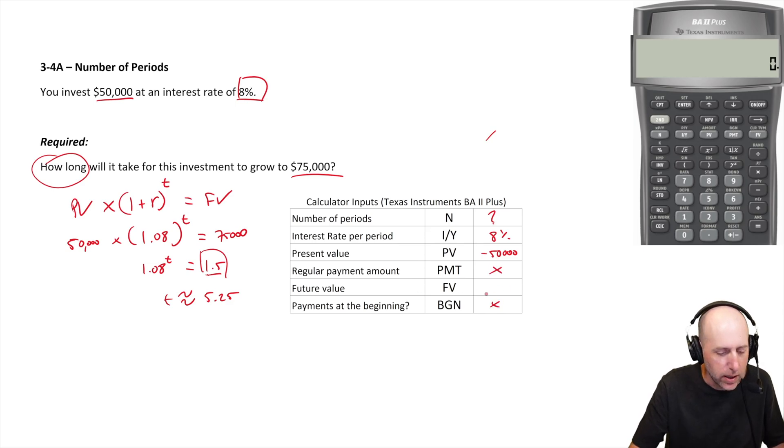There's no payments, there's no BGN, and our future value is $75,000. We put in $50 today to get $75 out in who knows how many years - 5.25 somewhere around there, a little higher we said.